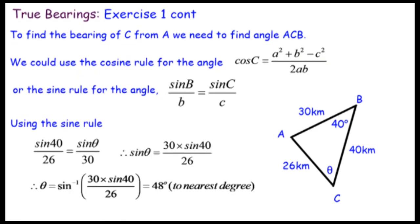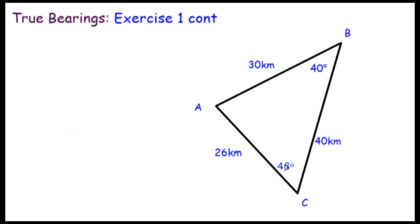Now we find angle θ at C using the sine rule: sin(B)/b = sin(C)/c. So sin(40°)/26 = sin(θ)/30. Cross-multiplying: 26·sin(θ) = 30·sin(40°). Dividing by 26 gives sin(θ) = 30·sin(40°)/26, so θ ≈ 48 degrees to the nearest degree.